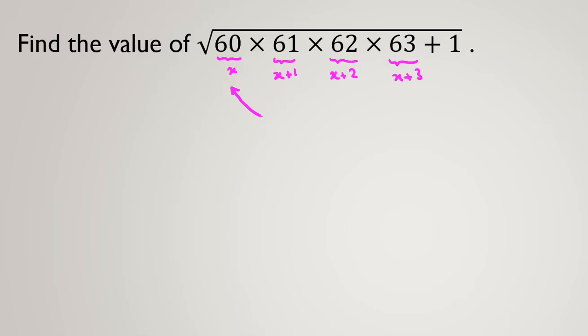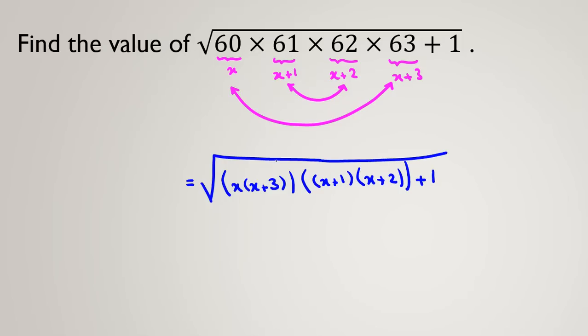Then the idea is to consider first and last one, similar to Gauss's idea. It is useful in many problems. Now, if we calculate, I can say equal to square root of x times x plus 3 times x plus 1 times x plus 2 plus 1.